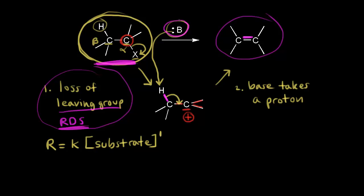Your base can't do anything until you lose your leaving group. Since the base does not participate in the rate-determining step — it participates in the second step — the concentration of the base has no effect on the rate of the reaction. So it's the concentration of the substrate only. Since it's only dependent on the concentration of the substrate, that's where the '1' comes from in E1.